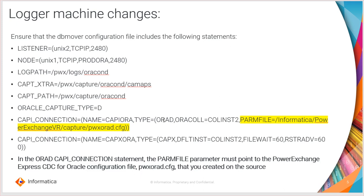One important thing: when you are performing the navigator row test, make sure all the listeners — both in the source machine as well as in the logger machine — are up and running. If you are reading from the condensed files for the row test output, also make sure your logger is up and running in the logger machine.